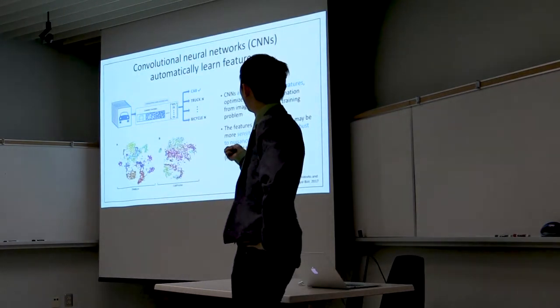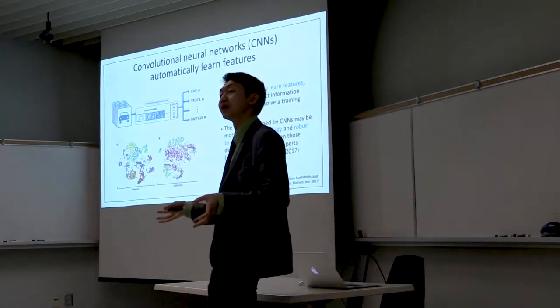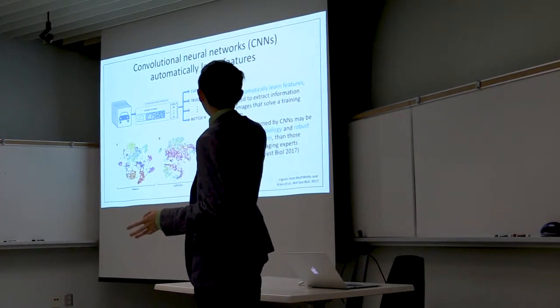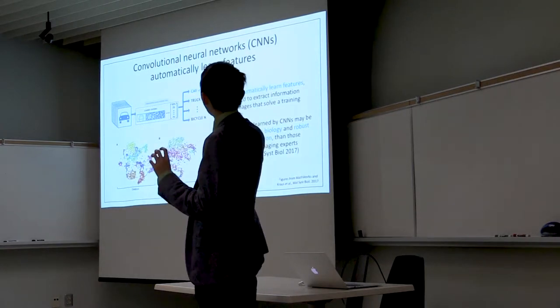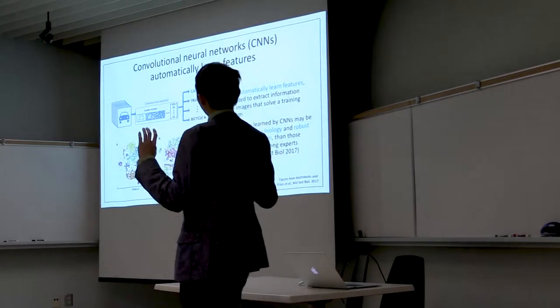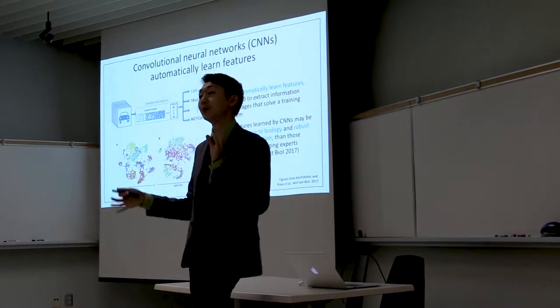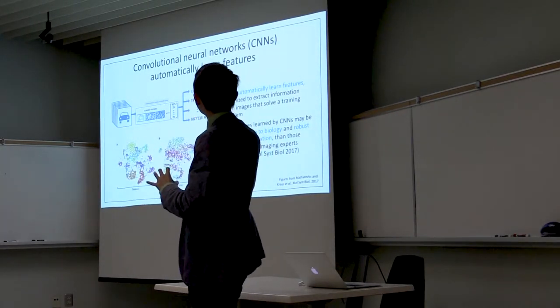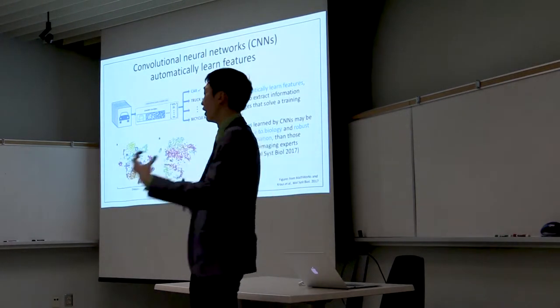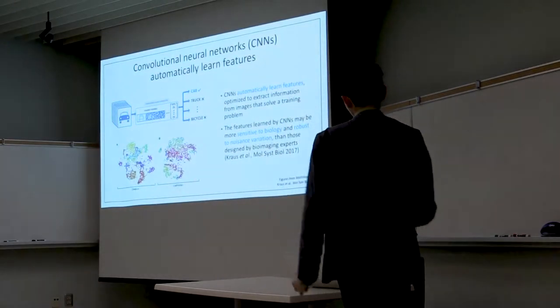As proof, I have here two scatter plots, and these are two-dimensional representations of the features learned by CNNs versus the features extracted by a classical feature extraction process. The different colors are different phenotypes in these images. And you can see that the features learned by CNNs separate different biological classes a lot cleaner in the feature space than classic features.